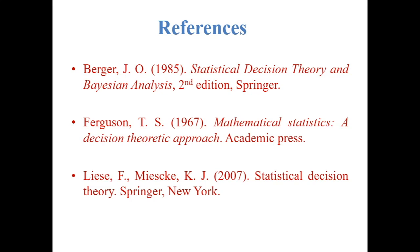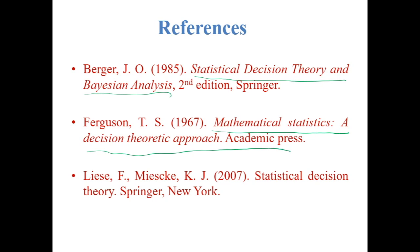Due to time restrictions, I am not able to discuss more applications of Bayes estimators and other theory, but interested readers can consult three important books on decision theory. The first is 'Statistical Decision Theory and Bayesian Analysis' by James Berger. Another good book is 'Mathematical Statistics: A Decision Theoretic Approach' by Ferguson. A more recent book is 'Statistical Decision Theory' by Lehmann and Casella. All three books are very classical and very good. Thank you for listening; if you have any further queries, you can contact me through email.